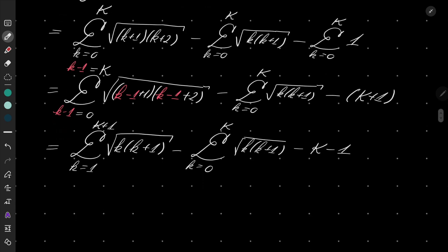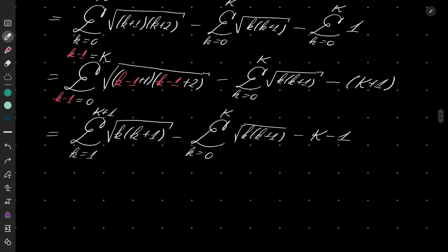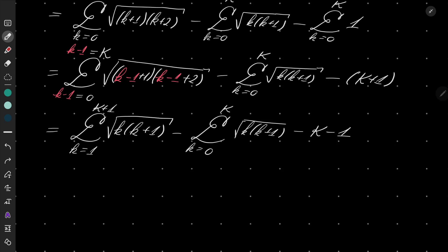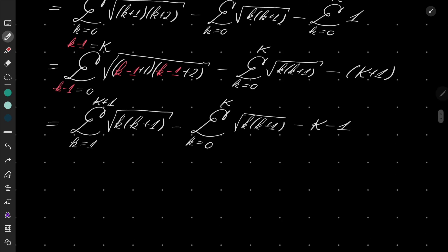And if you take a close look these two sums are very similar. A bunch of terms will be gone apart from two terms. Namely, in our first sum we are summing to k plus 1, so capital K plus 1 will stay. Everything from the first sum will be gone apart from this term, and in the second sum everything will be gone but for the 0th term.